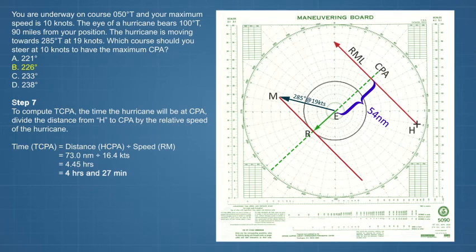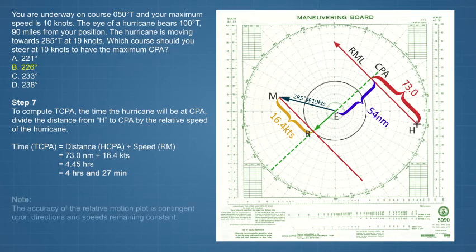To compute TCPA, the time the hurricane will be at CPA, divide the distance from H to the CPA by the relative speed of the hurricane. The distance of about 73 nautical miles divided by a relative speed of 16.4 knots is approximately 4 hours and 27 minutes. Note, the accuracy of the relative motion plot is contingent upon directions and speeds remaining constant.